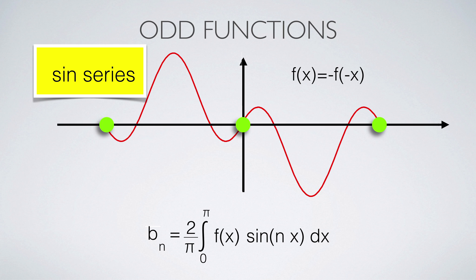If the graph of f is invariant under reflection at the origin, the function is called odd. For odd functions, only the sine series matters. Again we can integrate from 0 to π and multiply by 2.